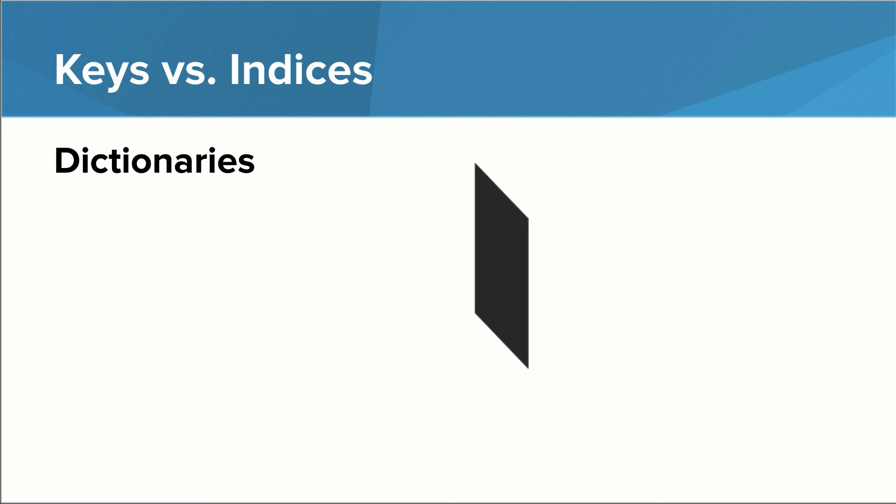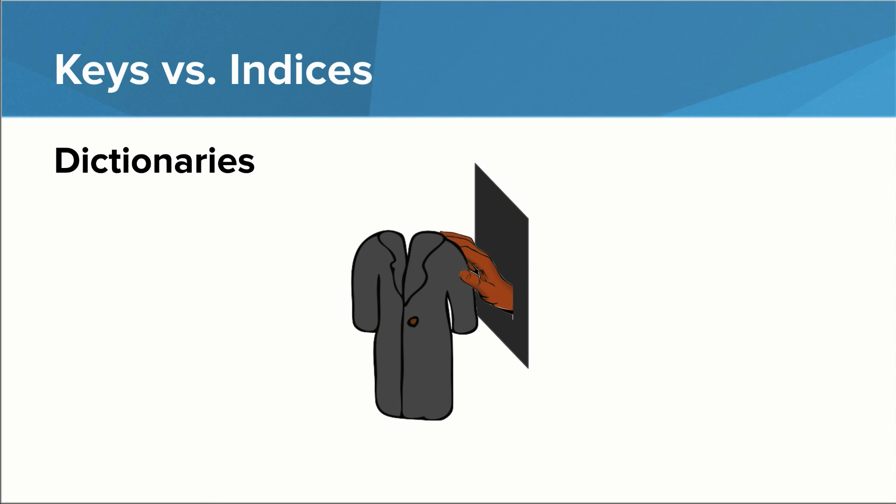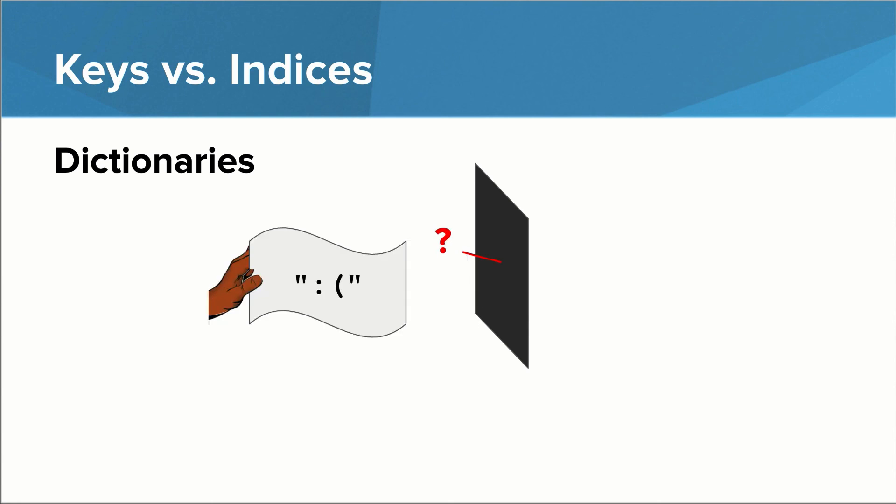With a dictionary style coat check, the piece of paper you're given doesn't have to just have a number on it. It can have your name. For now, just assume that a dictionary is magically very fast at looking up a coat based on a name or whatever is on the sheet of paper. Again, if you give it a key that isn't recognized, it causes an error.